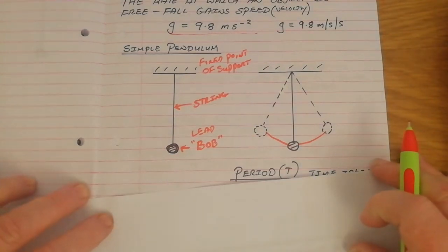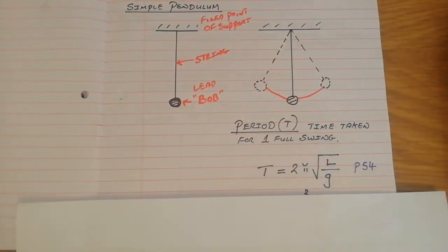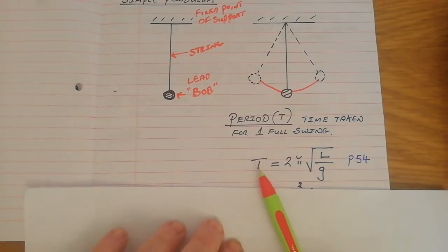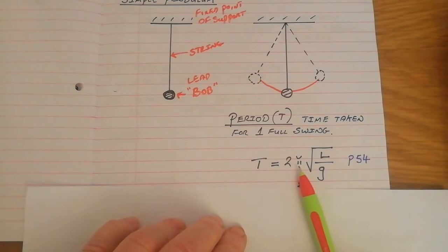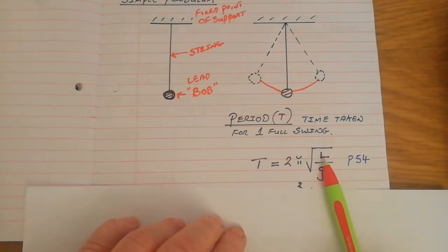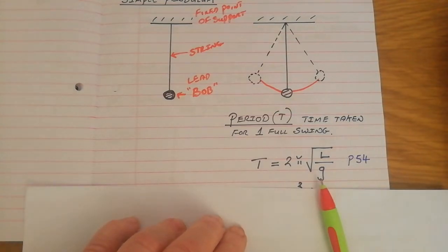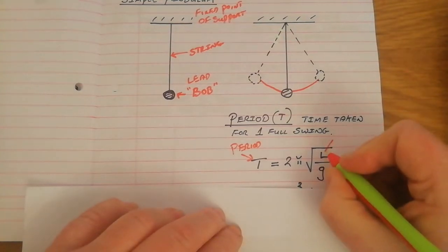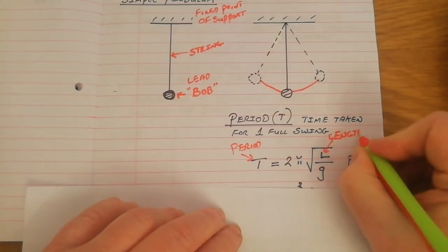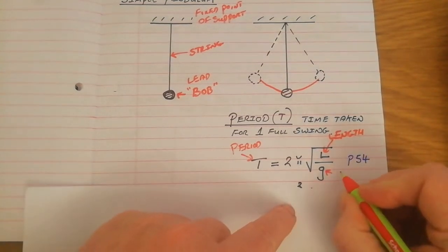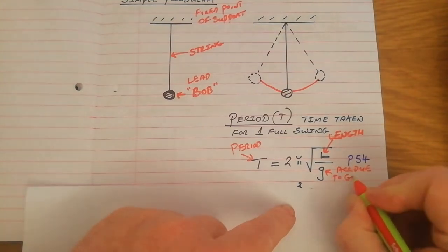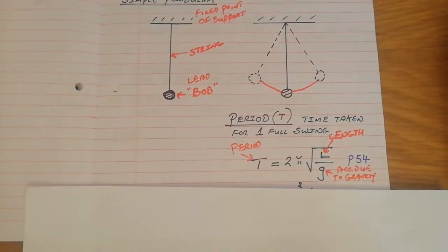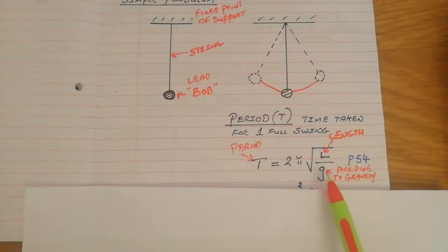There is a formula for the period of a pendulum: T equals 2π multiplied by the square root of L divided by g, where T is the period, L is the length of the pendulum, and g is the acceleration due to gravity. Both L and g are under the square root sign. That formula is on page 54 of your maths tables.